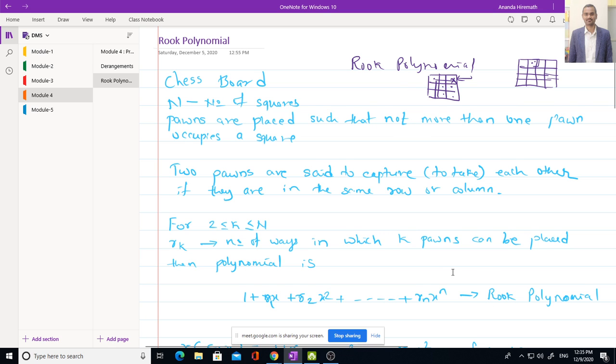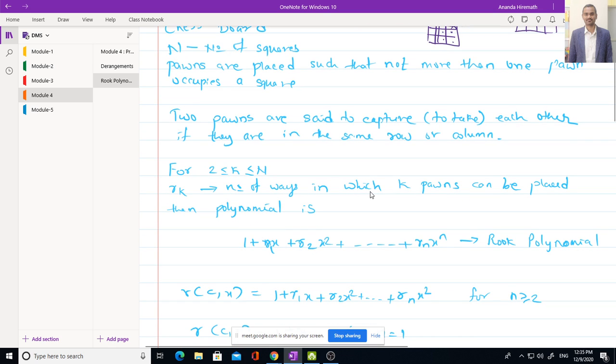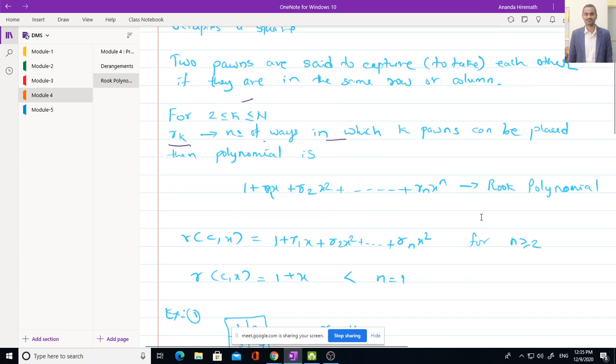There are R equal to 2 less than or equal to n where n is or K is number of pawns and Rₖ here indicates number of ways in which K pawns can be replaced. For that we have some formula or equation and that is known as Rook's Polynomial. The polynomial is given by 1 plus R₁X plus R₂X² plus up to RₙXⁿ and it is denoted by R of C comma X.